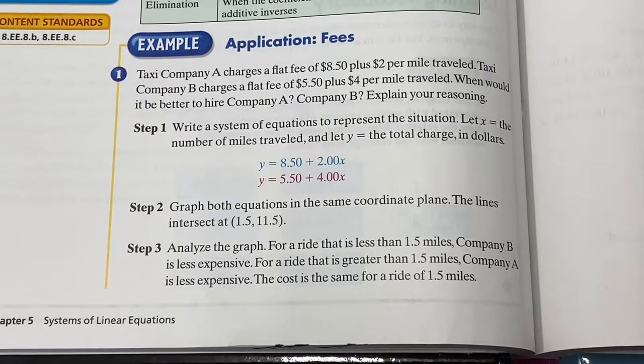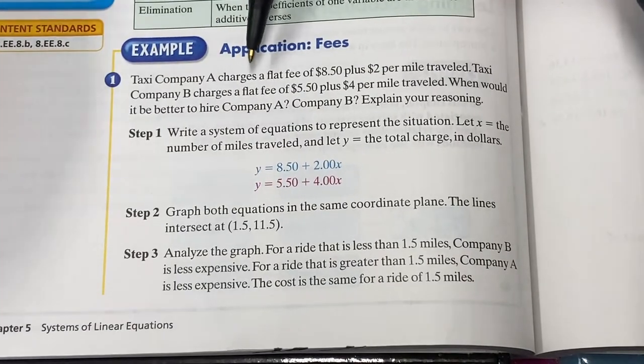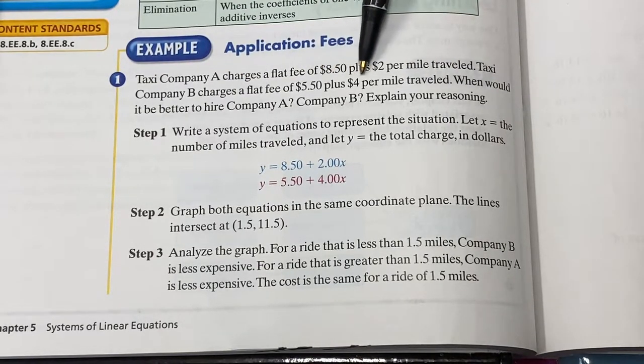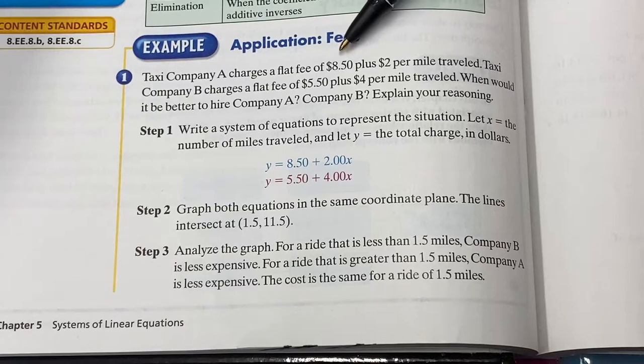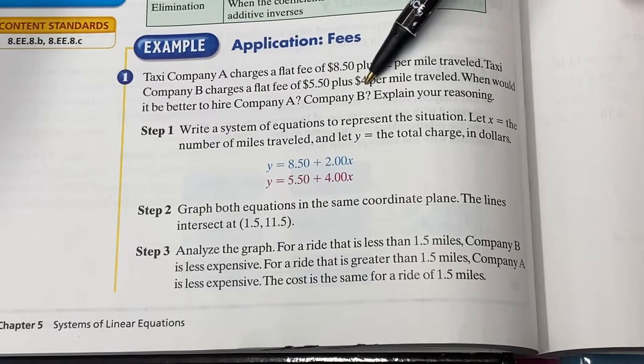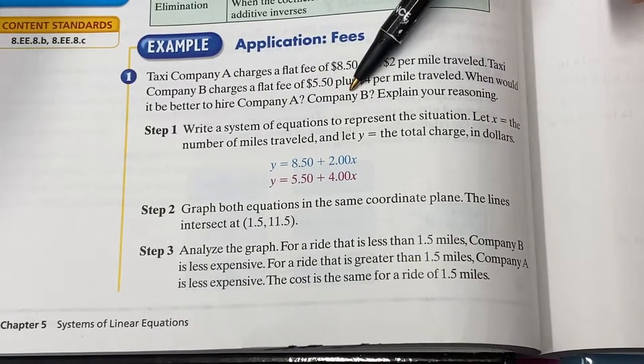So this last section here in chapter five, all about systems and word problems. We're going to read through example one here, then we will read through example two on the next page. And then we will try and go through two quick check problems together. Example one says taxi company A charges a flat fee of $8.50 plus $2 per mile traveled. And taxi company B charges a flat fee of $5.50 plus $4 per mile. So what we've got here is two different taxi companies charging two different rates. It wants to know when would it be better to hire company A versus company B and explain your reasoning?